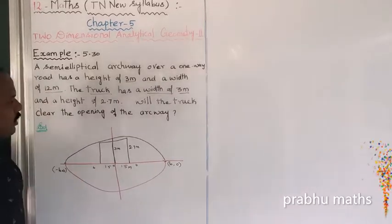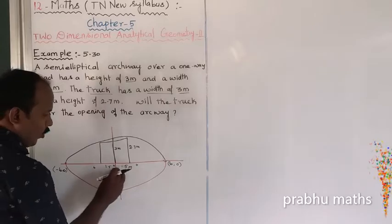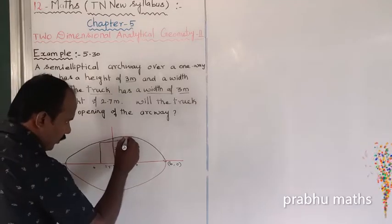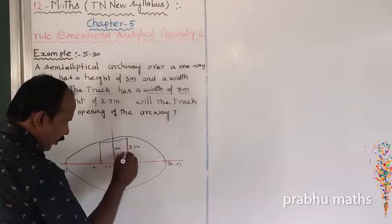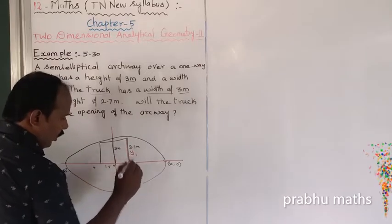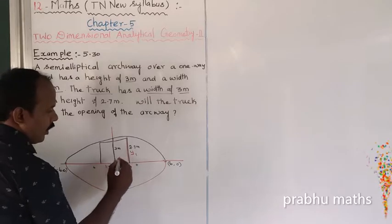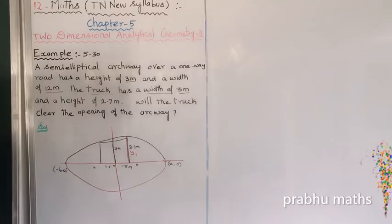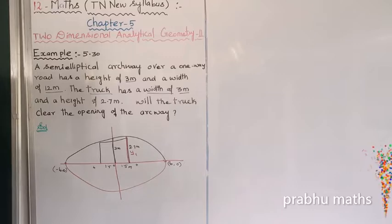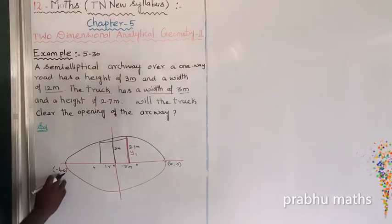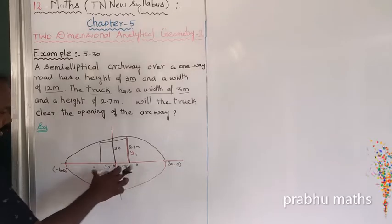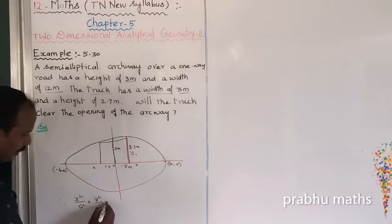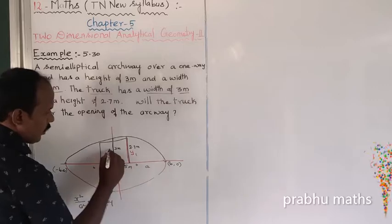We need to find the arch height at the edge of the truck. If the truck's half-width is 1.5 and we need the arch height at that point, we must find y when x = 1.5. The general form of the ellipse with major axis along the x-axis is x²/a² + y²/b² = 1.